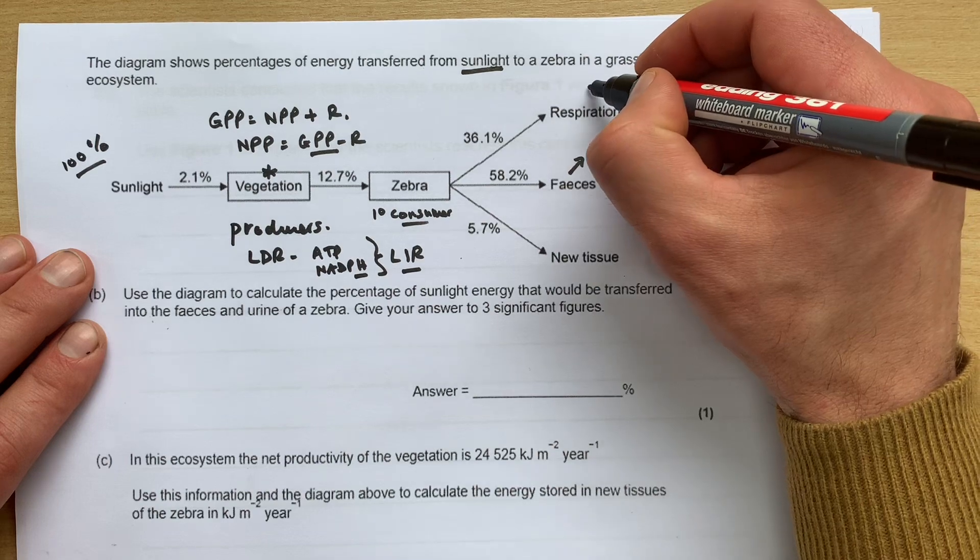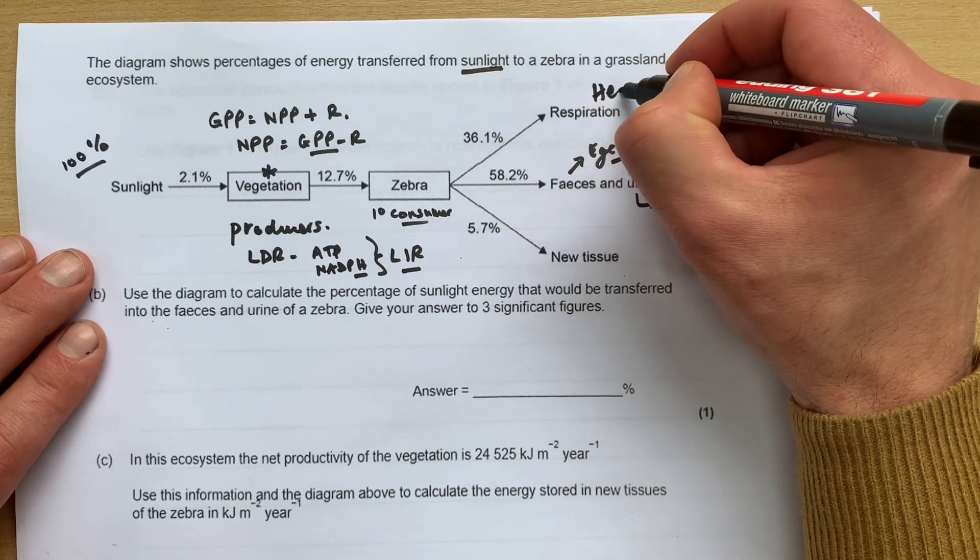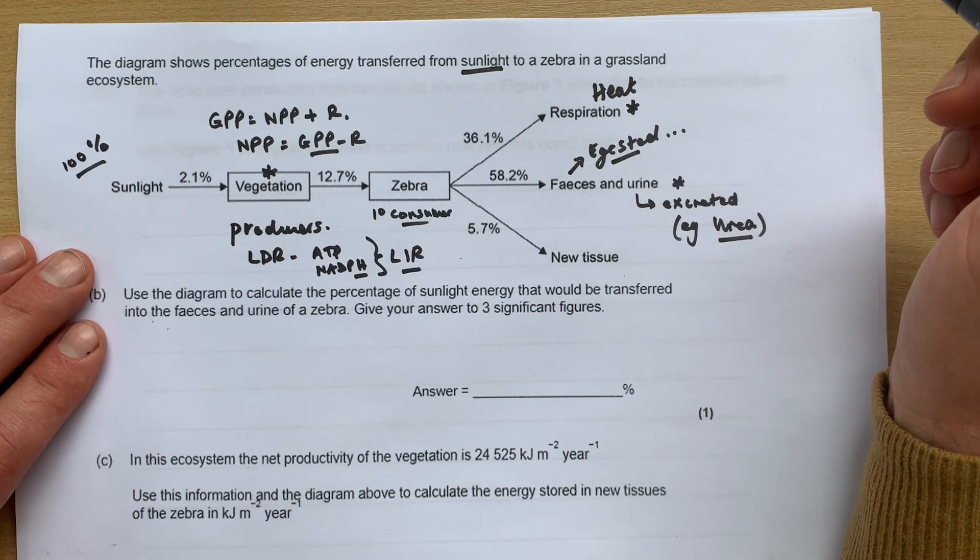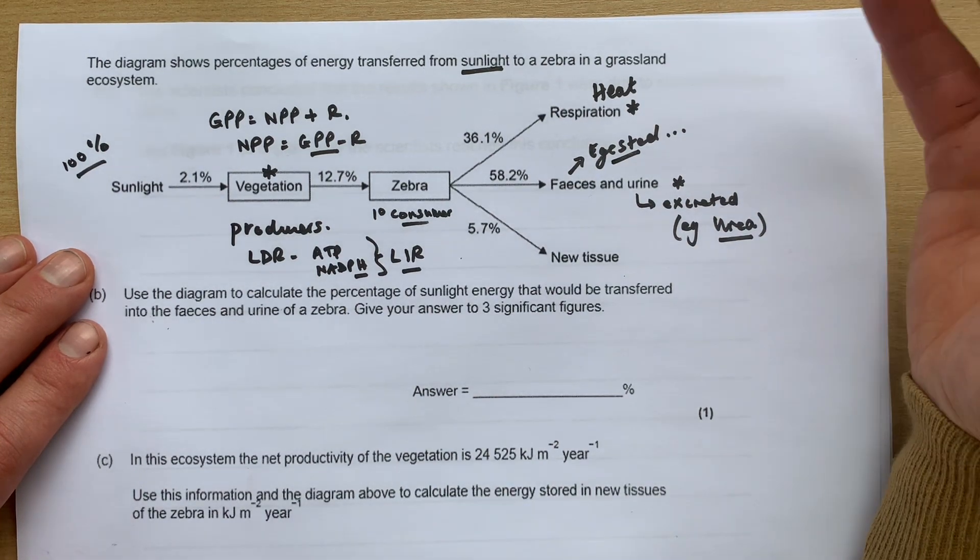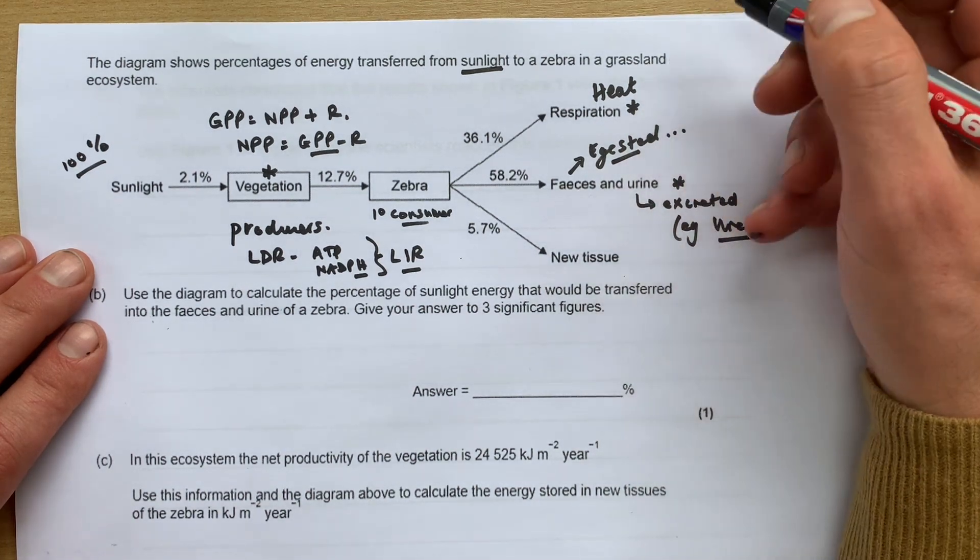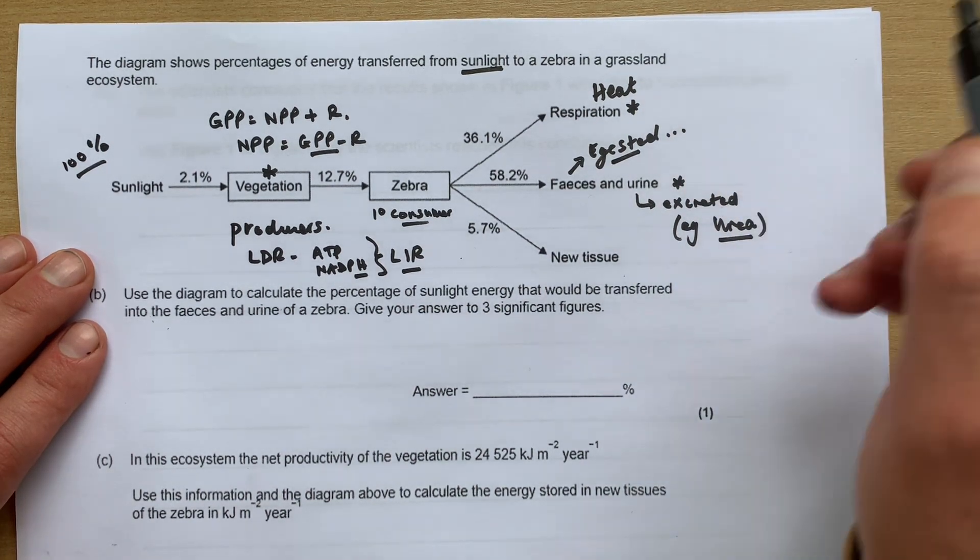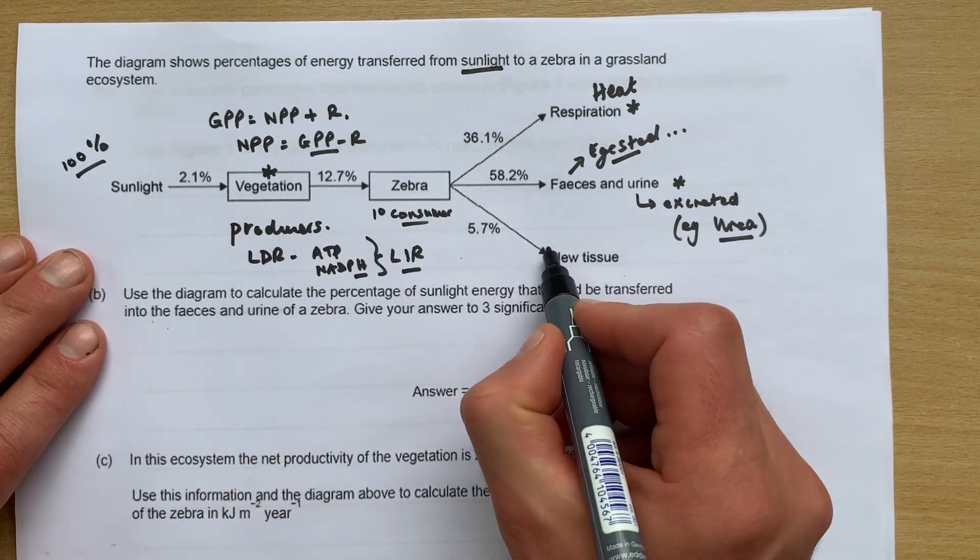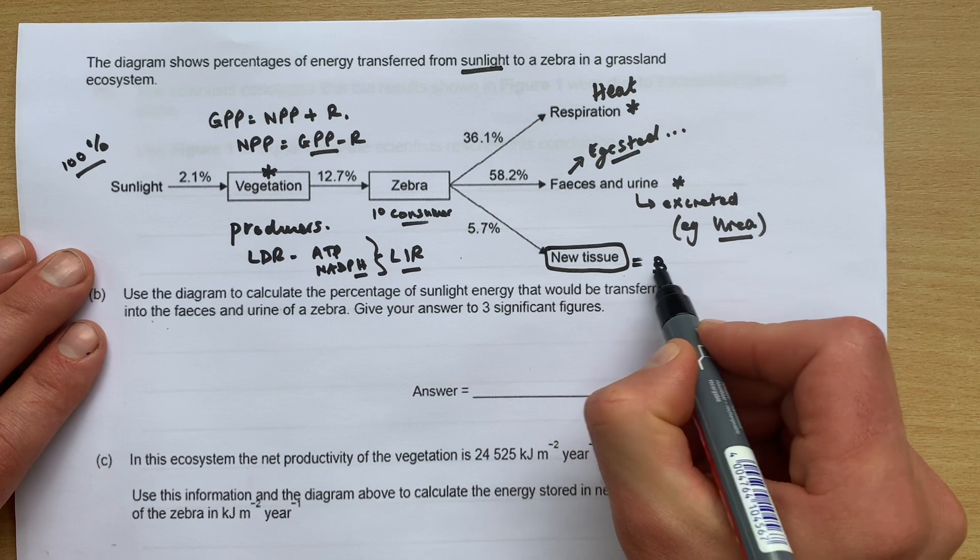Now of the energy that the zebra consumes, 36.1 percent is lost through heat via the process of respiration in the cells of the zebra. So we know respiration releases some heat energy which is then not available to build biomass - the heat's actually lost. 5.7 percent of that energy is then used to build new biomass within the zebra.